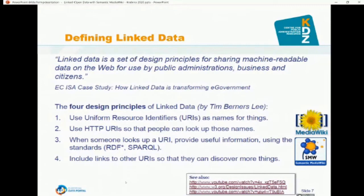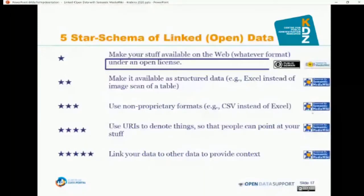We have an Excel export format in Semantic MediaWiki. Even better, use non-proprietary formats — CSV instead of Excel. In Semantic MediaWiki, CSV export was actually there before the Excel export. Four stars: use URIs to denote things so that people can point at your stuff — I will go into this in more detail. Five stars: link your data to other data to provide context, which is also something that Semantic MediaWiki is designed to do.